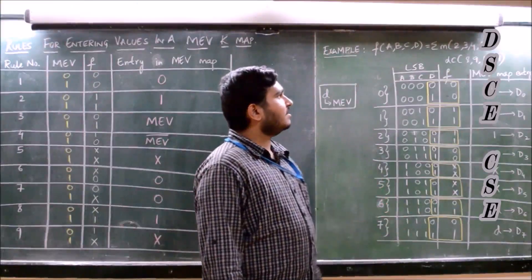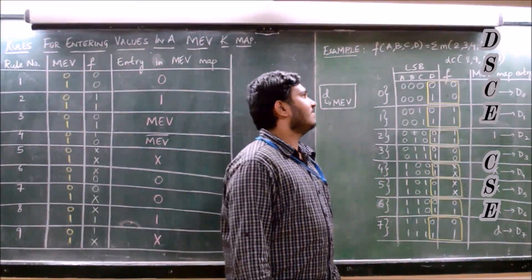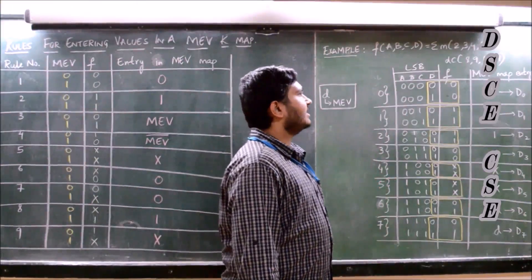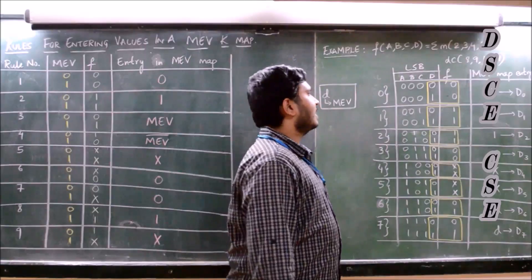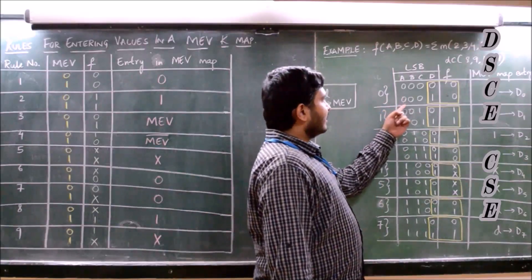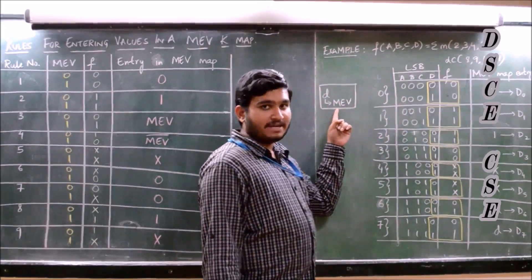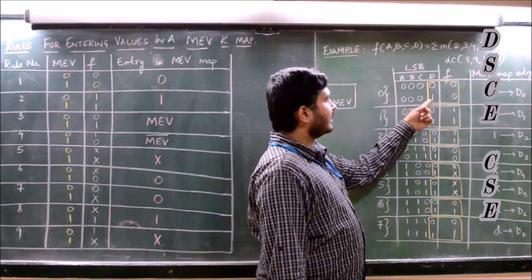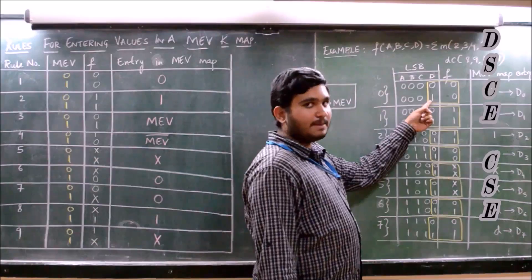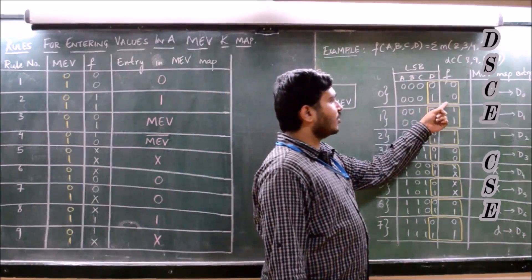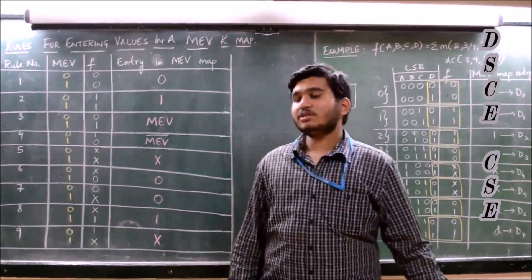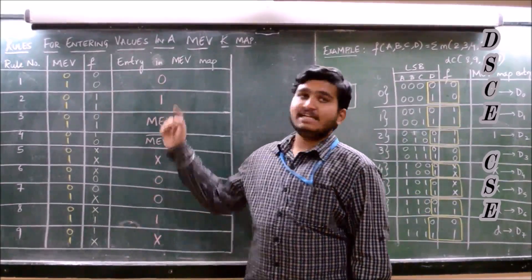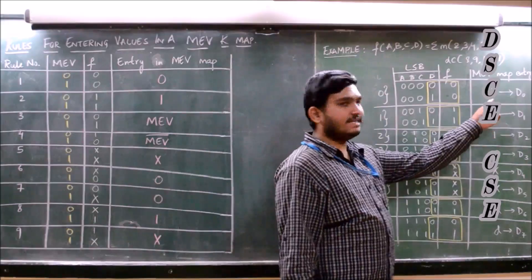Let me take an example of a 4-variable expression where the minterms are 2, 3, 4, 5, 13, 14, and the don't-care conditions are 8, 9, 10, 11. We have assigned D as the MEV variable. For the first condition, for both values of the MEV variable, the function output is 0. So according to rule 1, the MEV map entry should be 0, so we have entered 0.